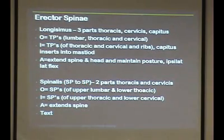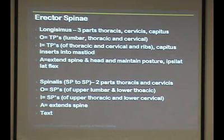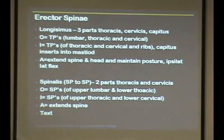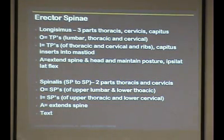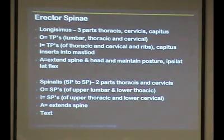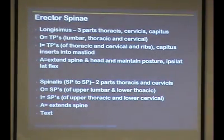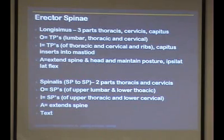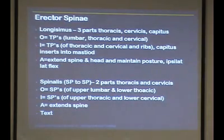Then we have spinalis. True to its name, it goes from one spinous process to another — just clustered in the middle. It has only two parts: thoracis and cervicis. It originates from the spinous processes of the upper lumbar and lower thoracic and inserts on the spinous processes of the upper thoracic and lower cervical. So it runs midline to midline, unlike the iliocostalis which is more lateral.